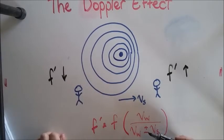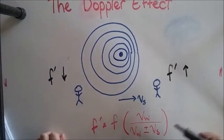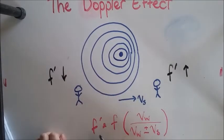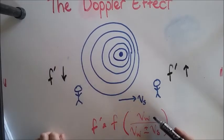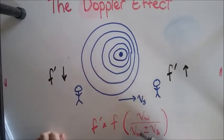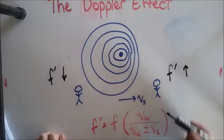So you might be wondering, what's this plus or minus? I want you to think about this from a mathematical perspective first. So we know that f' equals f, the actual frequency of the sound, multiplied by this. And you can see there's the velocity of the wave on both lines.